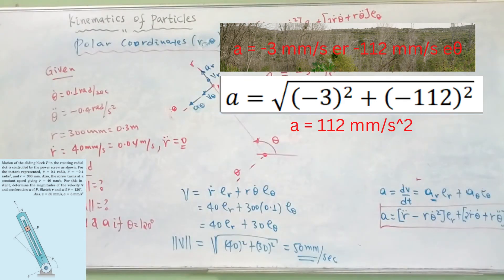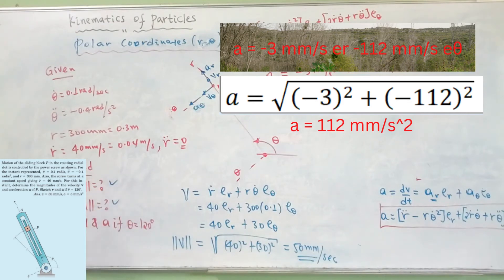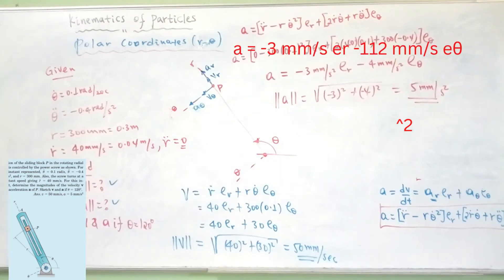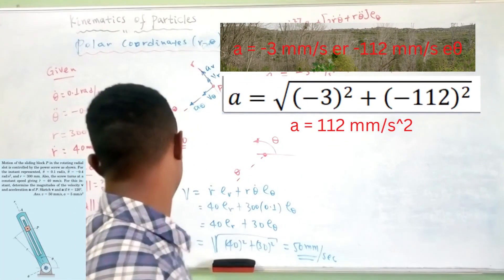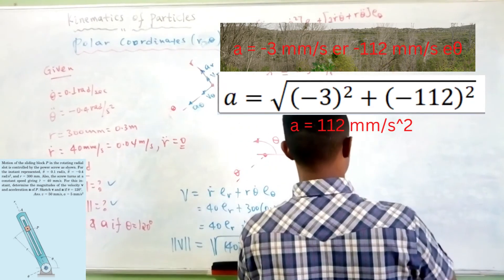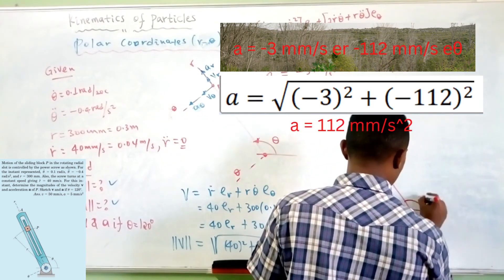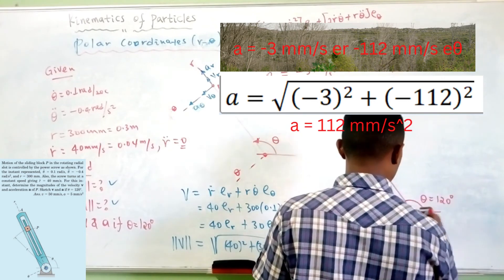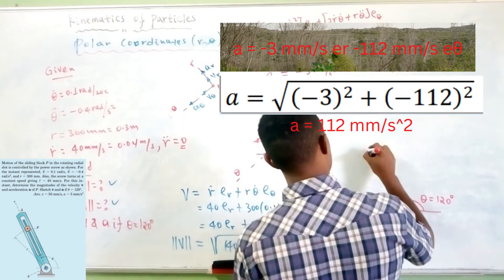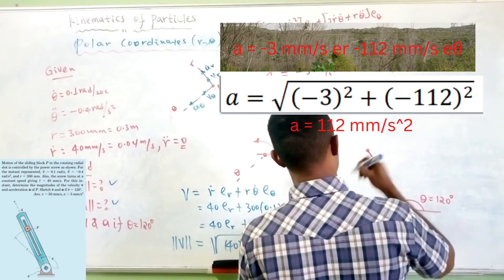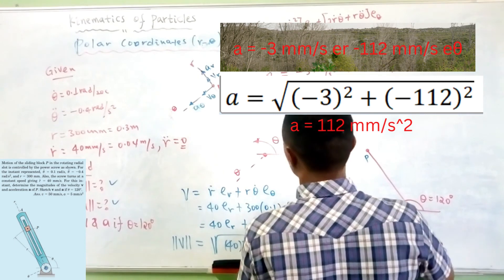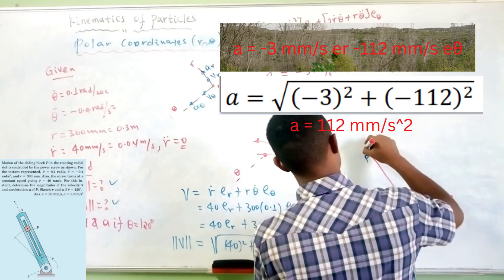We are asked to calculate the magnitude of velocity and the magnitude of acceleration. Finally, we are asked to calculate and sketch the velocity and acceleration when theta is equal to 120 degrees.